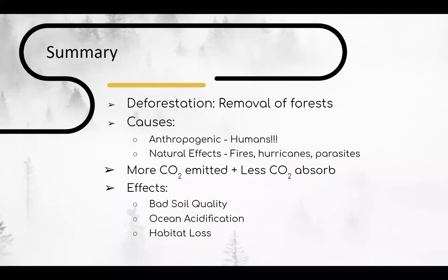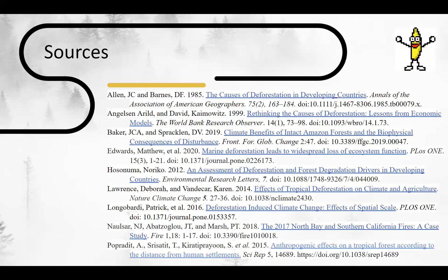In summary, deforestation is the removal of forests, either anthropogenically — by humans gathering resources or clearing land to develop — or naturally, from disasters like fires, hurricanes, and parasites. The combination of humans producing more carbon dioxide and there being less forest to absorb emissions is a massive contributing factor to the worsening of climate change, resulting in things like worsened soil quality, ocean acidification, and habitat loss. Here we have our sources from all the research papers we used, along with other references.